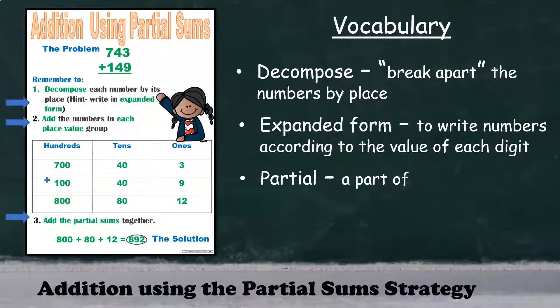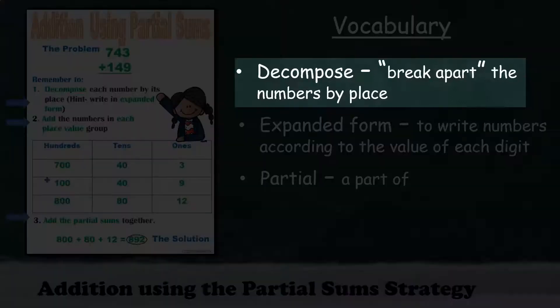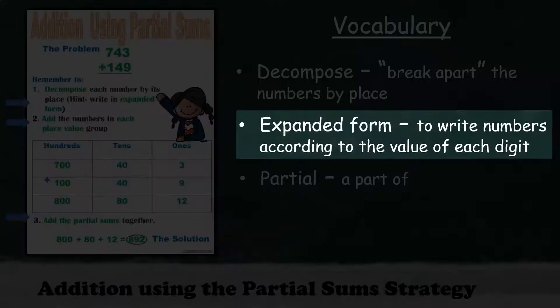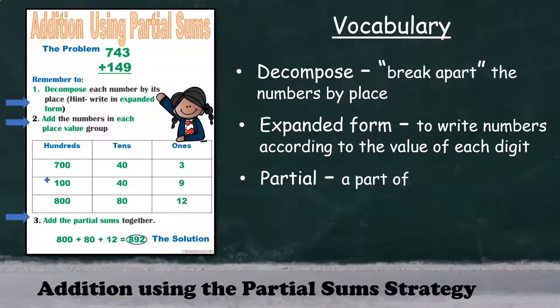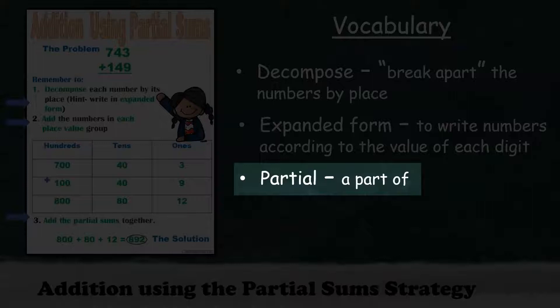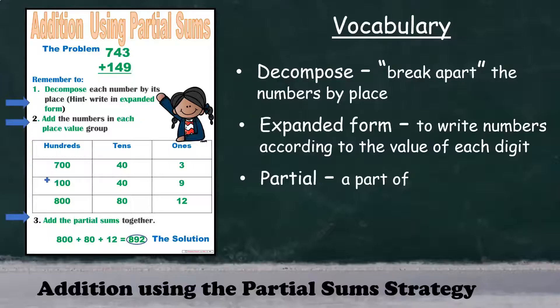Before we get into what I like to call the horizontal partial sum strategy, let's go over a few key vocabulary words that your children will need to be familiar with. Decompose simply means to break apart the numbers by place. Expanded form—that's to write the numbers according to the value of each digit, as you can see on the left. And partial, in simple terms, means a part of. It's important that your students are familiar with these vocabulary words, as they will be exposed to them throughout the use of this strategy.